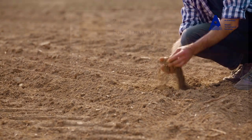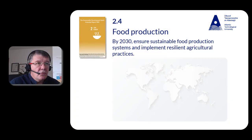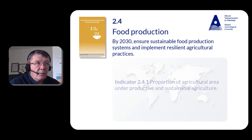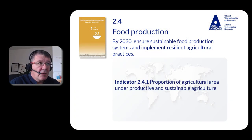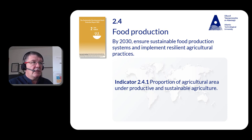This is measured using Indicator 2.4.1, proportion of agricultural land under productive and sustainable agriculture, and in the extended report there are no key statistics reported on that particular target.